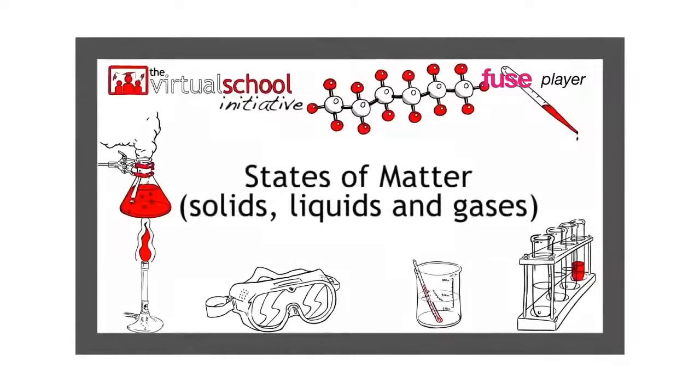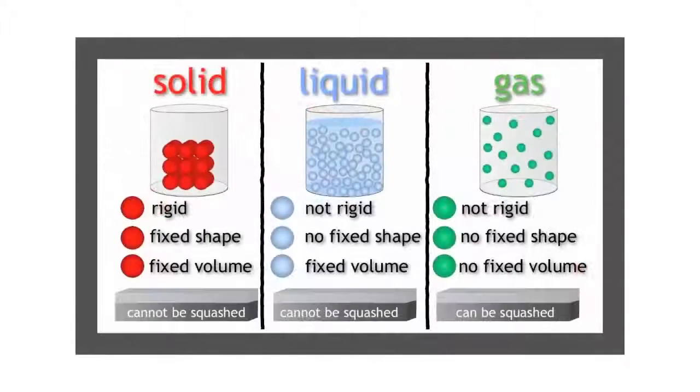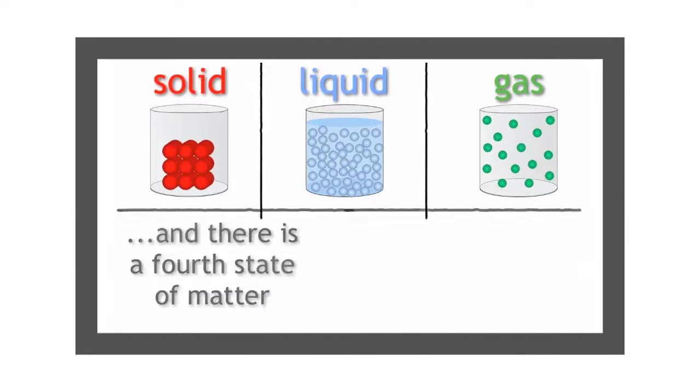You may have learned about the three states of matter: solid, liquid, and gas in a previous lesson. Did you know that there is a fourth state of matter, plasma?